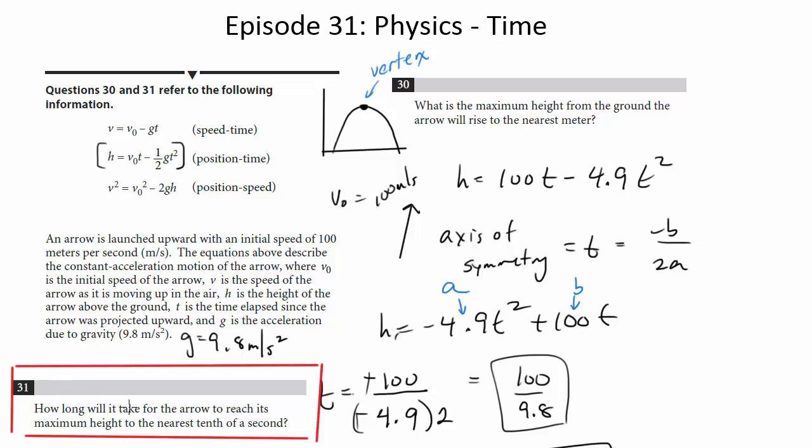Number 31 says, how long will it take for the arrow to reach its maximum height to the nearest tenth of a second? As you can see, the work that we did for the previous question is still on the screen, because in the process of doing the work for the previous question, we actually got this answer.